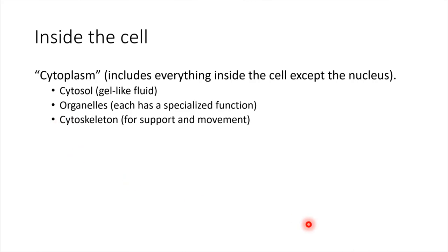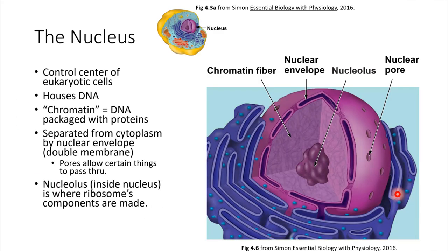What we're going to do is look inside of the cell, and where we'll start is with the nucleus — the one thing that is not part of the cytoplasm. Here's a small schematic of that general animal cell, with the plasma membrane shown in yellow.